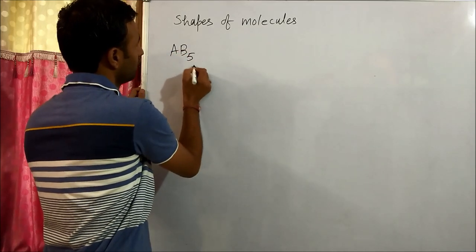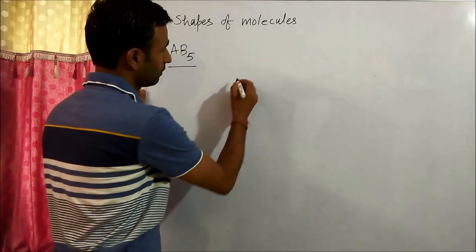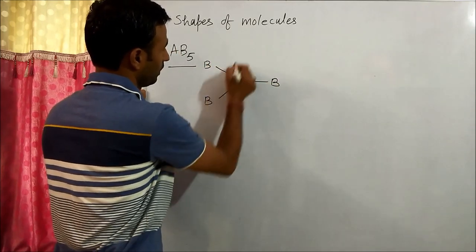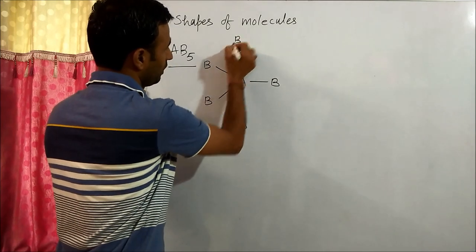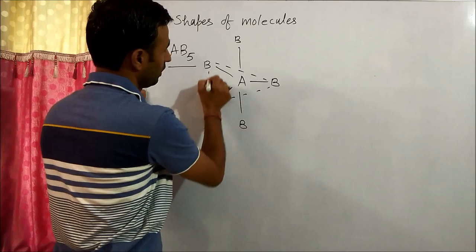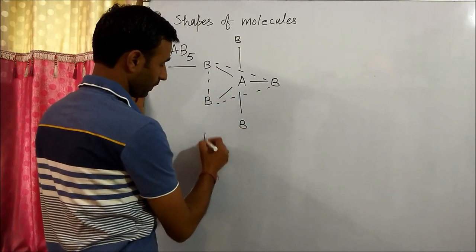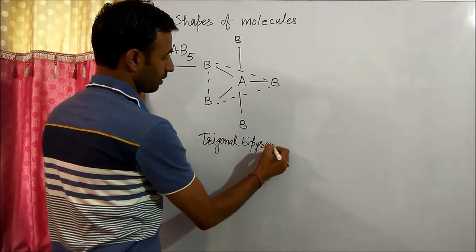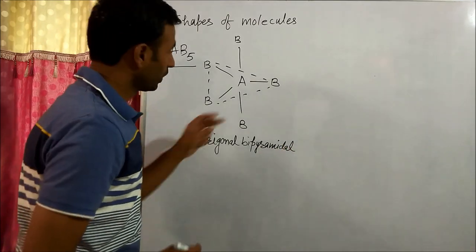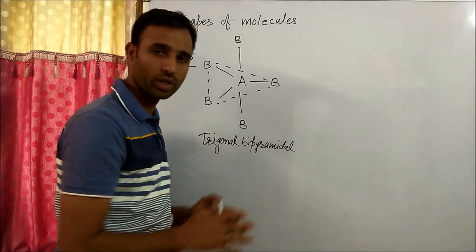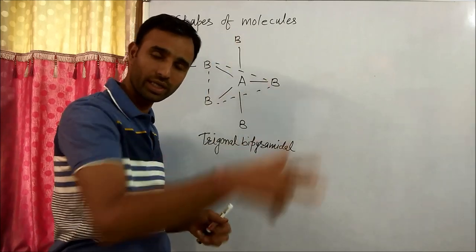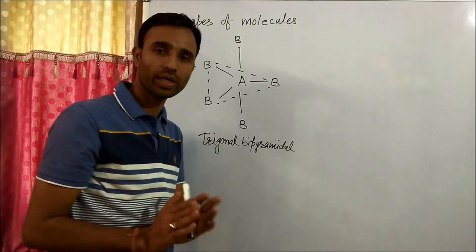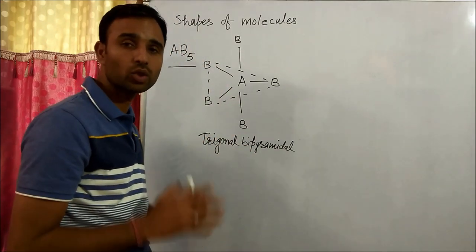With five bond pairs, the basic shape is trigonal bipyramidal. Now in this case, all the bonds are not equivalent. In the case of linear, trigonal planar, and tetrahedral, all the bonds are equivalent, but in this case there are two types of bonds.